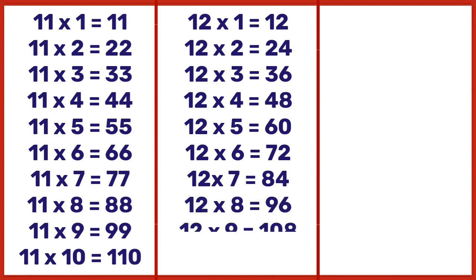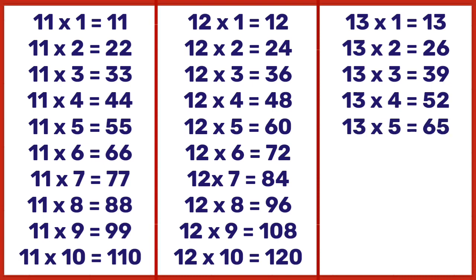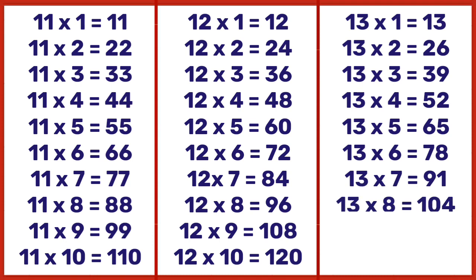12 nines are 108, 12 tens are 120. 13 ones are 13, 13 twos are 26, 13 threes are 39, 13 fours are 52, 13 fives are 65, 13 sixes are 78, 13 sevens are 91, 13 eights are 104.